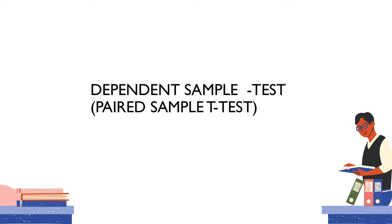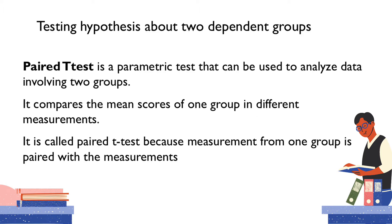The next statistical tool that can be used to check for hypotheses is the dependent sample t-test, or paired sample t-test. This test is useful to compare or to test hypotheses about two dependent groups. This is applicable for parametric tests that can be used to analyze data involving two groups. It compares the mean scores of one group in different measurements. It is called paired t-test because measurement from one group is paired with the measurement of the other group.